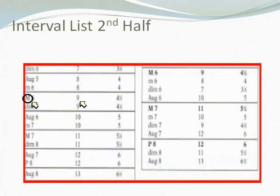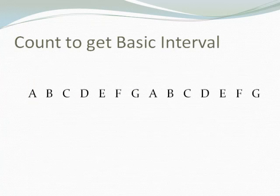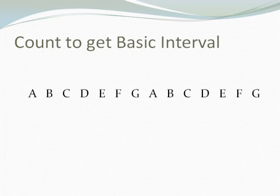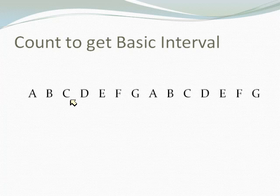The best way to approach a specific interval is to get the basic interval first. I put a line of letters from the musical alphabet — it doesn't have to start with A. A, B, C, D, E, F, G, A, B, C, D, E, F, G — the musical alphabet. I put that out there and then figure out what my basic interval is. For example, if I were starting with a C and I want to do the interval of a fifth...